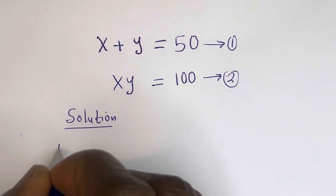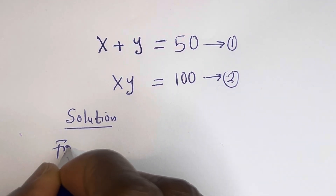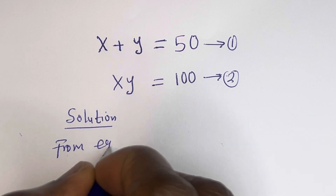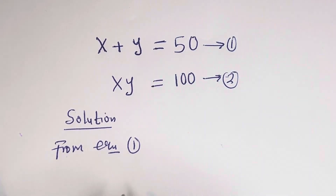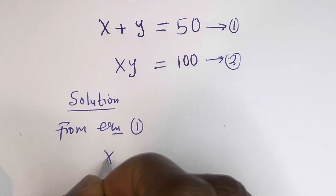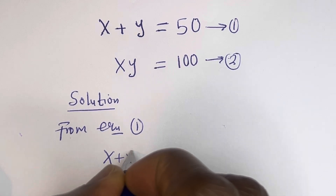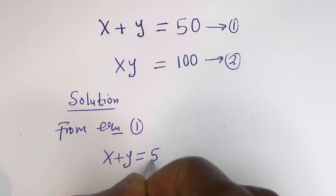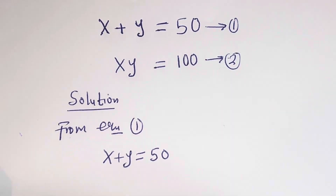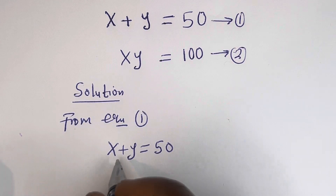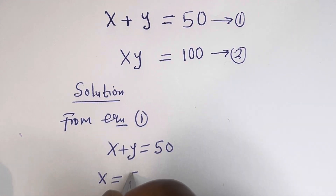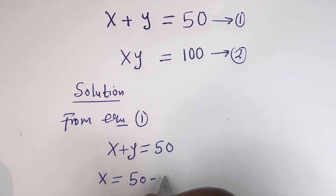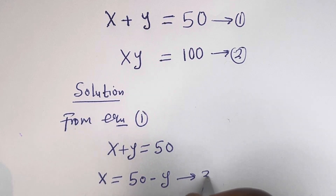Then from equation 1: x plus y is equal to 50. Let's make x the subject of the formula. x is equal to 50 minus y. Let's call this equation 3.